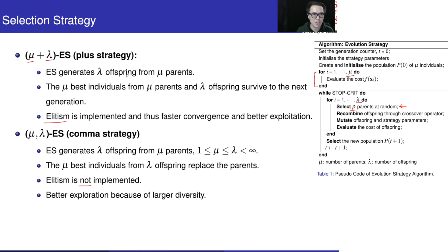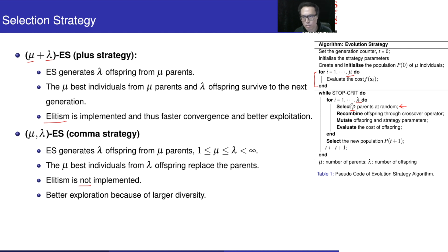The ρ (rho) parameter does not appear in the strategy notation here because ρ refers to how we generate the offspring — it is the crossover operation. When we use different kinds of crossover operations, we generate the corresponding number of parents for that process.